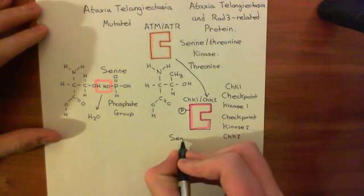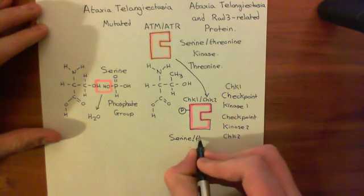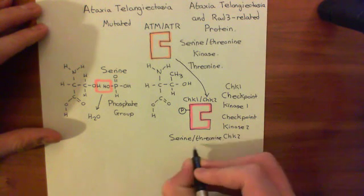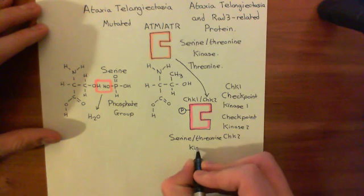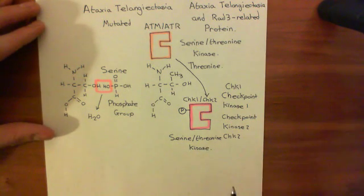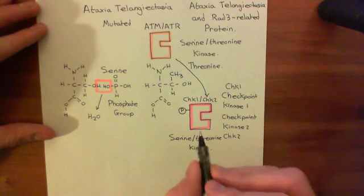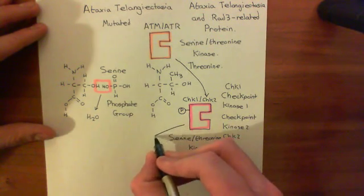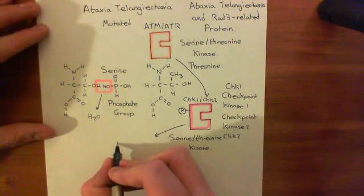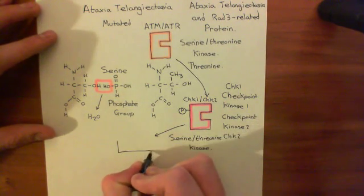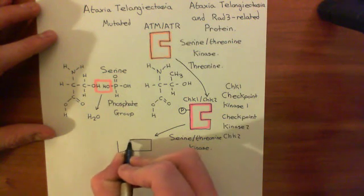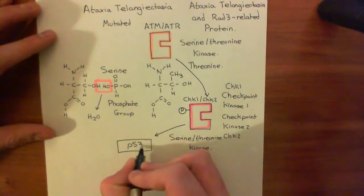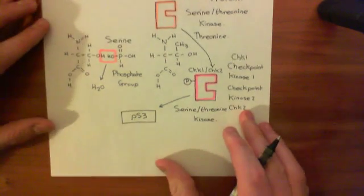This is very nice because it's also a serine-threonine kinase, so I don't have to explain the mechanism of what that means again. These can also add phosphate groups onto serine and threonine residues in proteins. Now CHK1/CHK2 is going to go and phosphorylate the next protein in this, and the next protein is P53.